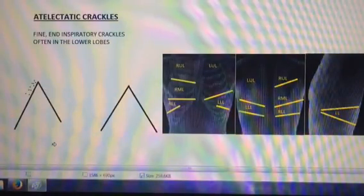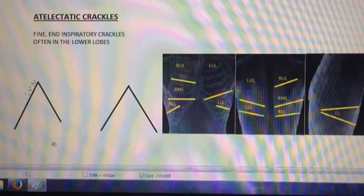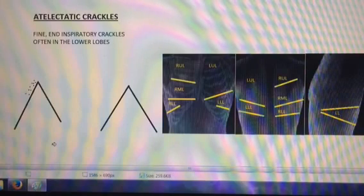In this video, I want to talk to you about atelectatic crackles. Atelectasis usually occurs when a person is breathing shallow and not adequately inflating alveoli in the lung periphery. This causes some areas to get gooey and gummy and close up.